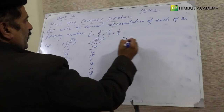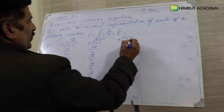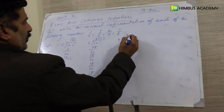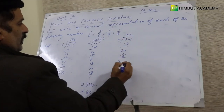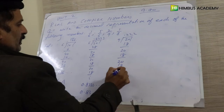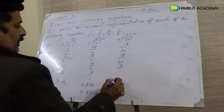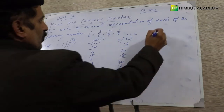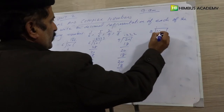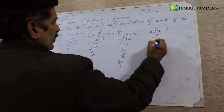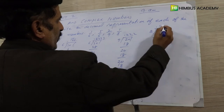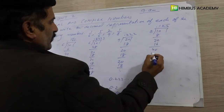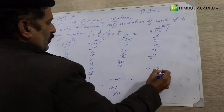2 divided by 9: performing the division, we get 0.2222 repeating, so this is 0.2̄. Then 1 divided by 8: performing the division, we get 0.125. So this is the answer: 0.125.